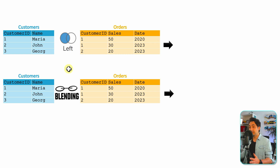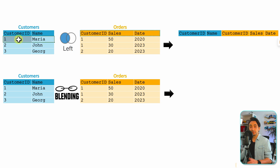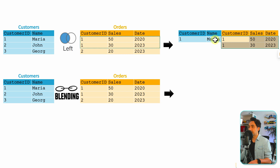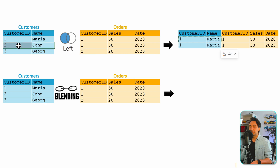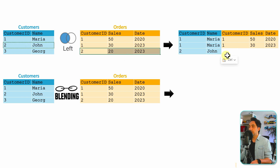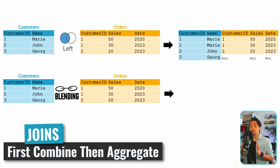Starting with the left join: a left join gives all the data from the left side and only the matching rows from the right. We combine fields from left and right record by record. Customer number one has two rows in orders, so Maria appears twice in the output. Customer ID two has one order, so that's one row. George has no orders, so we get nulls.